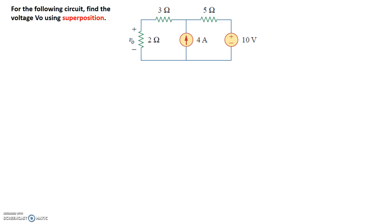In order to do superposition, we basically use one source at a time and set all other sources to zero. We only have two sources, so let's start by setting the current source to zero. When the current source is set to zero, that particular current source acts as an open, meaning there's no current flowing here, so it acts as an open wire.